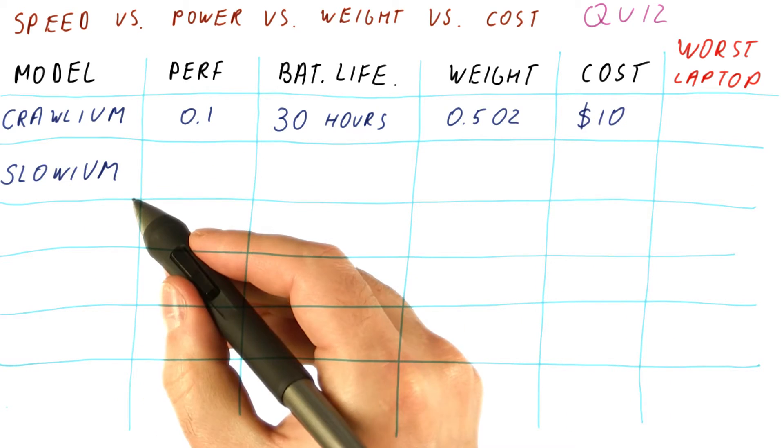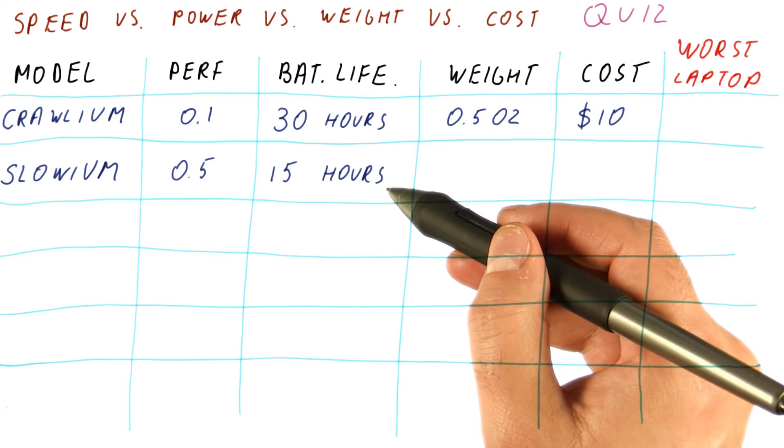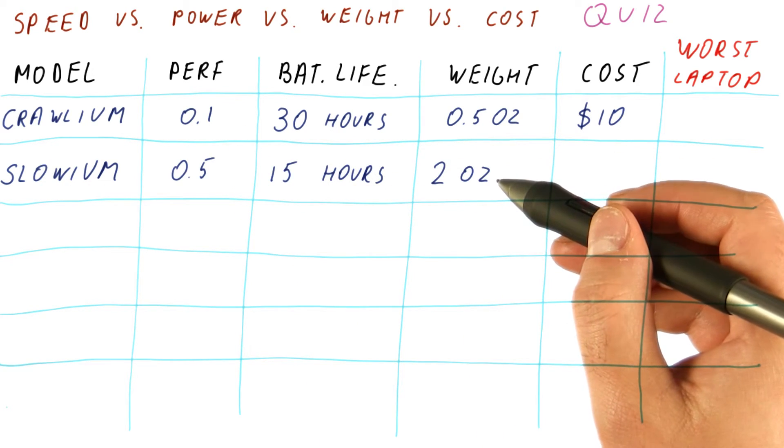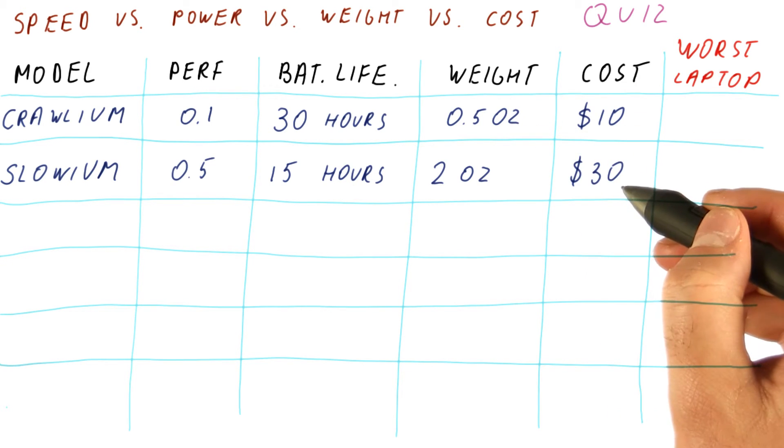The next model is the Slovium. It has much more performance, half the battery life however. It's still very light, but it's four times as heavy as the Crolium, and about three times more expensive.